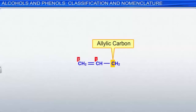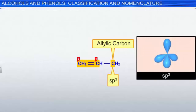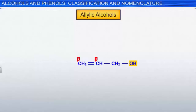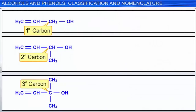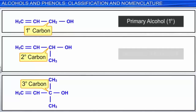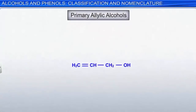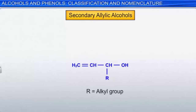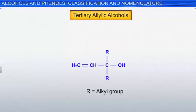An allylic carbon is a carbon atom bonded to a carbon-carbon double bond. Note that the allylic carbon is sp3 hybridized. An allylic alcohol has a hydroxyl group attached to an allylic carbon. Allylic alcohols can also be characterized as primary, secondary, or tertiary. A primary allylic alcohol has one other carbon group attached to the allylic carbon. Secondary allylic alcohols have two carbon-containing groups joined to the allylic carbon. Tertiary allylic alcohols have three carbon groups bonded to the allylic carbon.